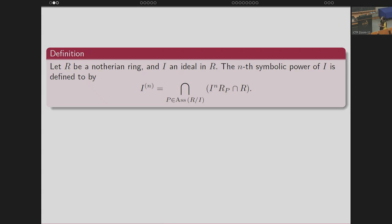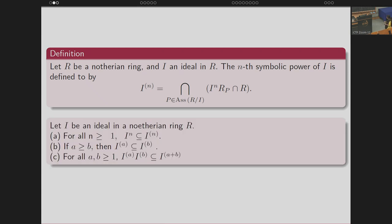There are certain properties that the symbolic power satisfies. First, the ordinary power is always sitting inside the symbolic power. And if A is greater than or equal to B, then the A-th symbolic power is sitting inside the B-th symbolic power. In general, the ordinary power sits inside the symbolic power, but it may not be an equality.